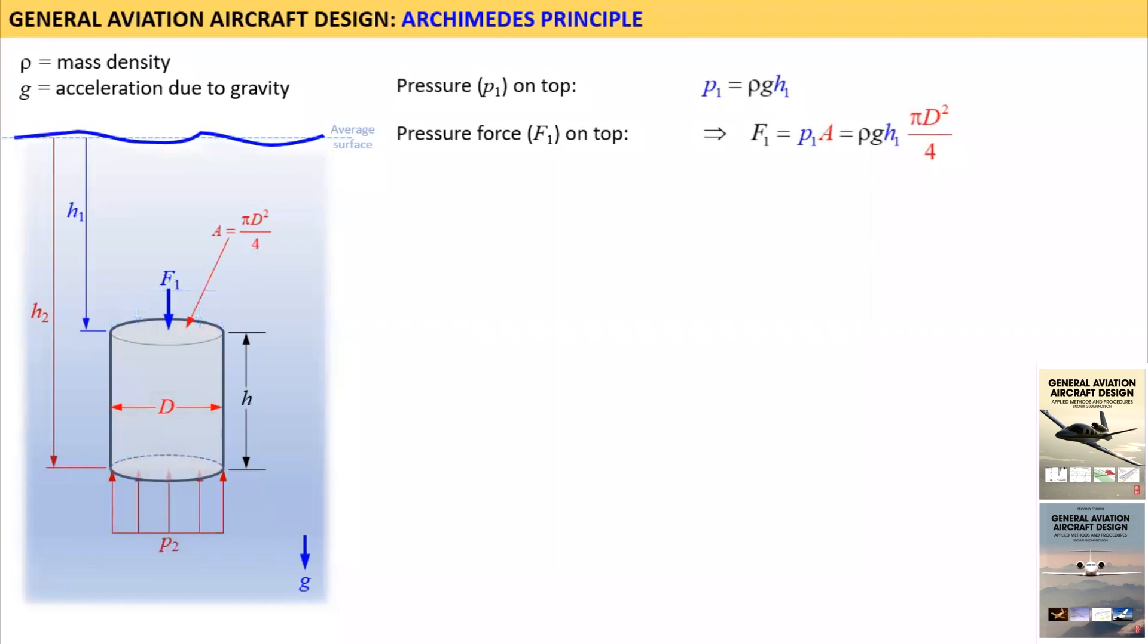Similarly consider the bottom surface. The pressure acting on it is rho GH2. Thus the pressure force F2 acting on the bottom is P2 times A. This pressure force points upward in a direction opposite of F1.